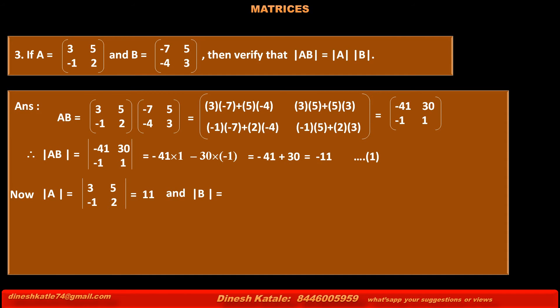And the determinant of B equals the determinant of [-7, 5; -4, 3], which is (-7)×3 minus 5×(-4). That is -21 + 20, equal to -1. Therefore, determinant of A into determinant of B equals 11×(-1), which is equal to -11. Consider this as statement 2.